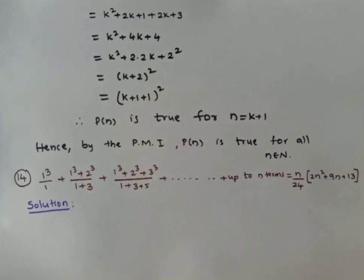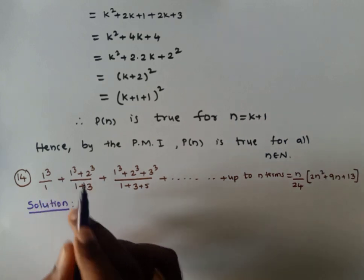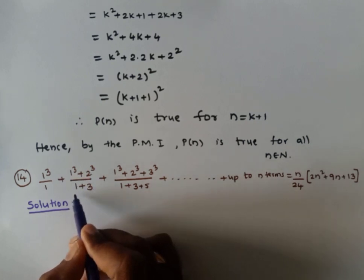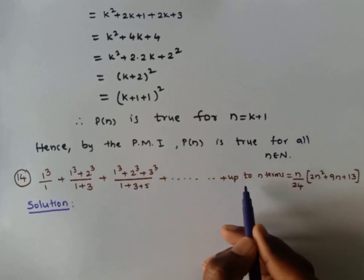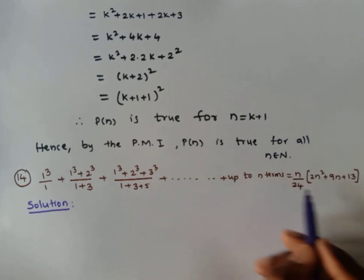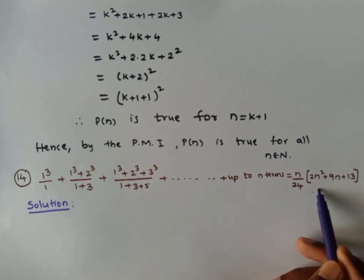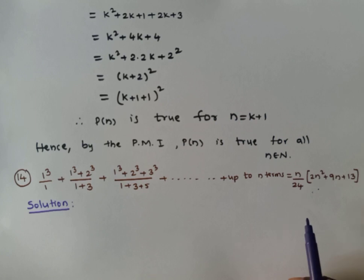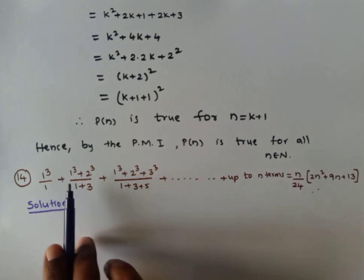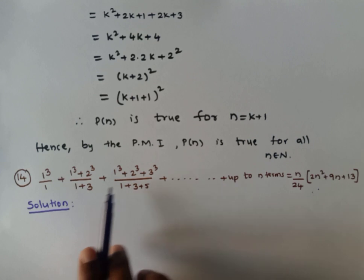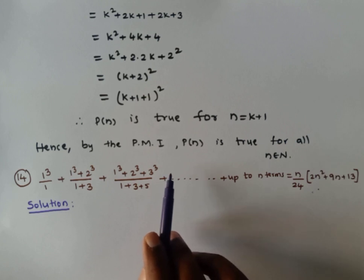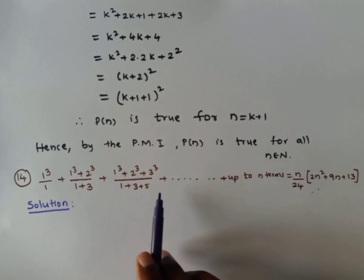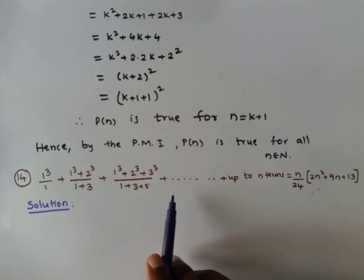The next problem is the 14th one from the exercise. It is: 1³/1 + (1³+2³)/(1+3) + (1³+2³+3³)/(1+3+5) + ... up to n terms = n/24 × (2n² + 9n + 13). The terms follow a pattern where the numerator is a sum of cubes and the denominator is a sum of odd numbers.